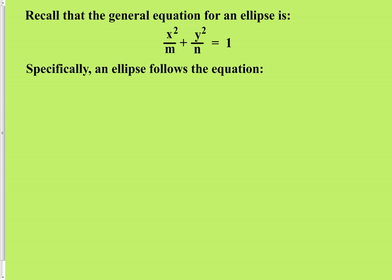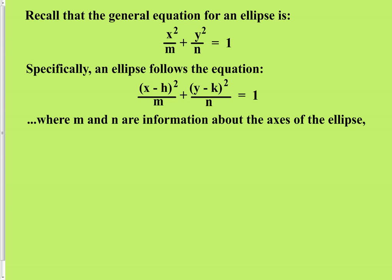A little extra information about the equation of an ellipse: as we did with the center of our circle, the center of our ellipse can be moved. So the full equation is: x minus h, quantity squared, over m, plus y minus k, quantity squared, over n, always equals 1. M and n are information regarding the axes of the ellipse. One of them is going to stretch or compress it in the x direction, and the other in the y direction.